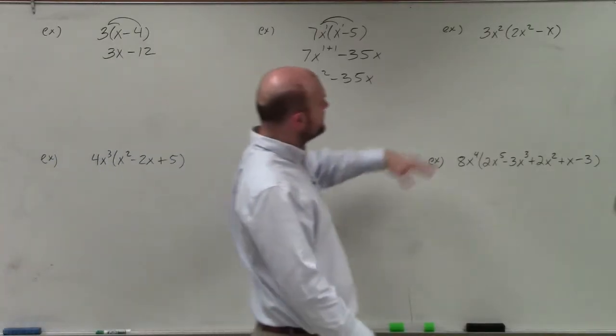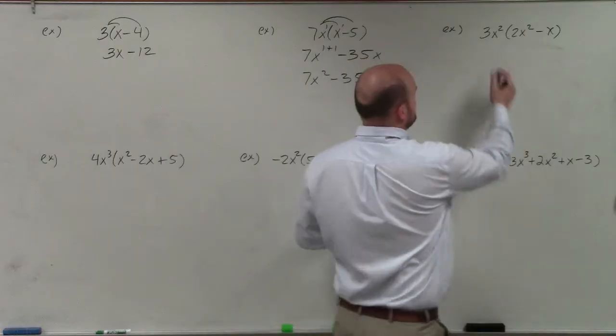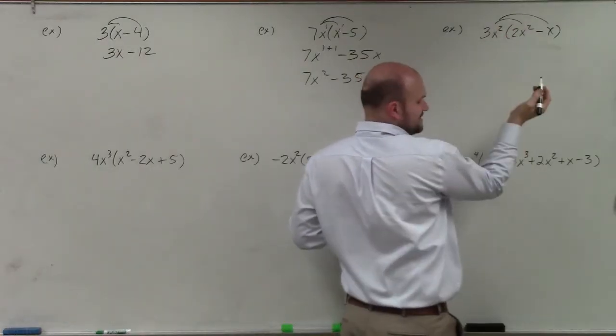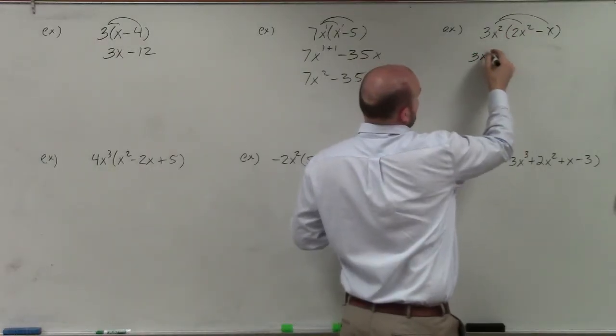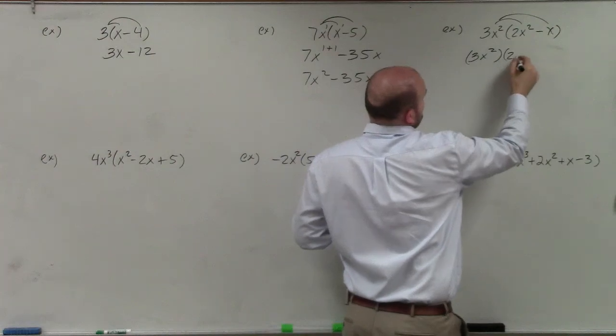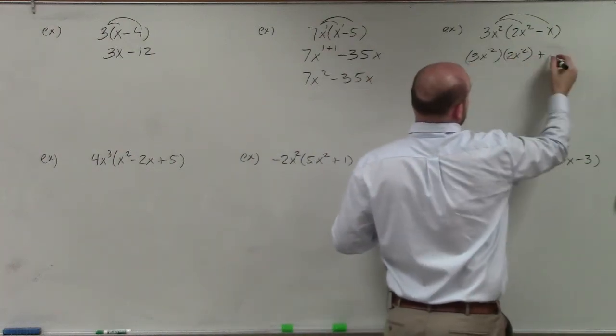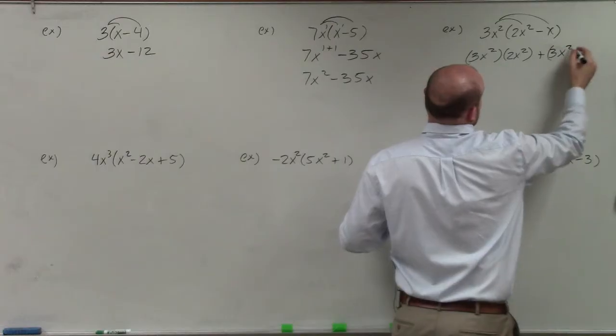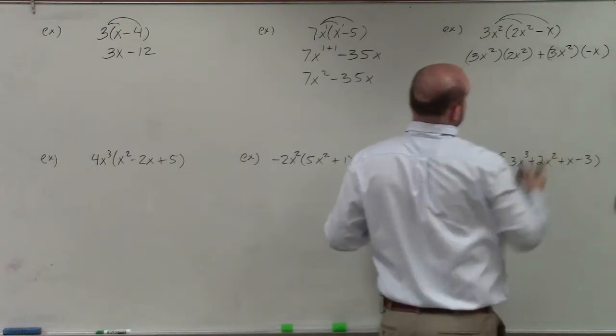Getting into the next example, you can see that now I'm basically multiplying if I distribute, and I'm just going to write this one out, so therefore it would be 3x squared times 2x squared, plus, because that's a positive, 3x squared times negative x.